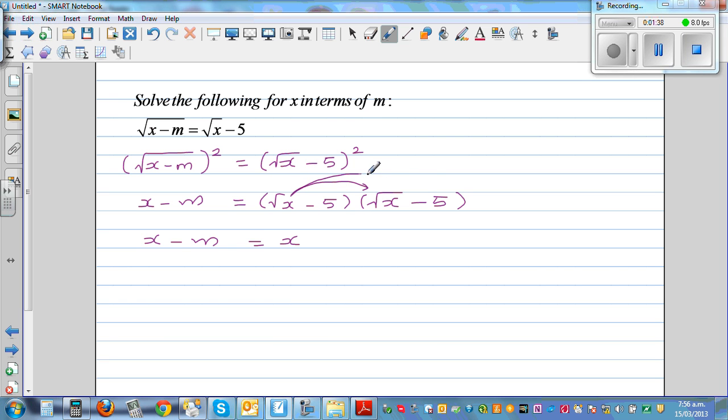Now, √x times -5 is -5√x. -5 times √x is -5√x. And -5 times -5 is plus 25.